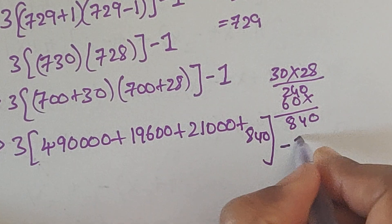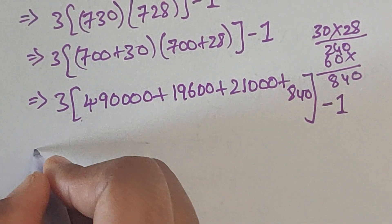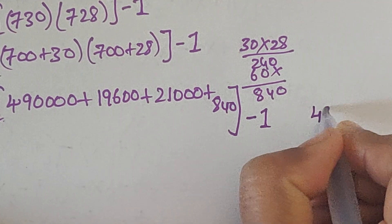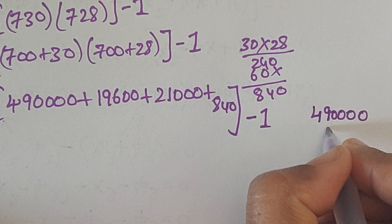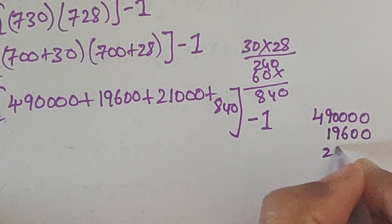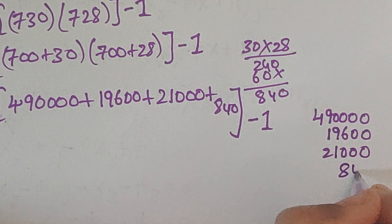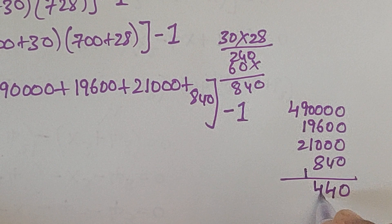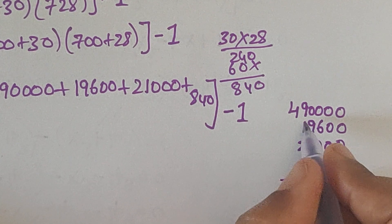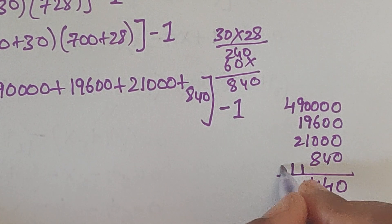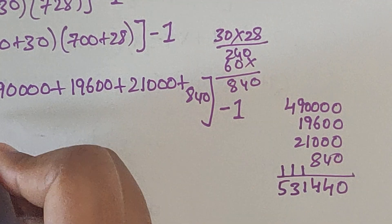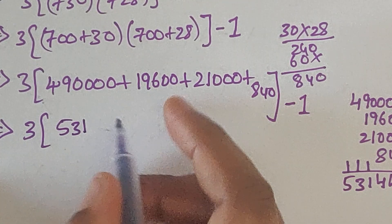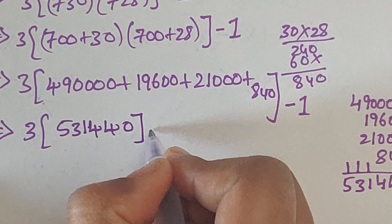Close the bracket, minus 1. Now we add these four numbers: 490000 plus 19600 plus 21000 plus 840. Adding them together: 9 plus 10 is 11, carry 1; 10 plus 12 is 13; 4 plus 1 is 5. We get 531440. So we have 3 times 531440, close the bracket, minus 1.